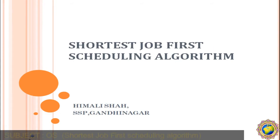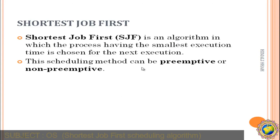What do you mean by the SJF scheduling algorithm? It is an algorithm in which the process having the smallest execution time is chosen for the next execution. We have already studied FCFS — First Come First Serve — where whichever process comes first is considered for execution first. In Shortest Job First, we consider the smallest execution time to choose the next execution.